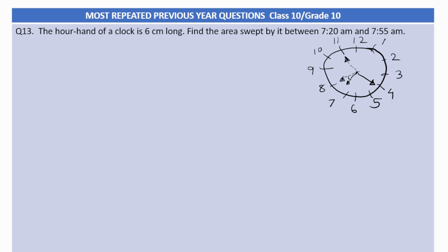So we need to understand how much angle the hour hand makes from its initial position at 7:20 to final position at 7:55. Now we know that for one full rotation of the hour hand it takes 12 hours. So 12 hours will be equal to 360 degrees. Now in one minute, we need to convert 12 hours into minutes. So I multiply by 60, making it 12 into 60.